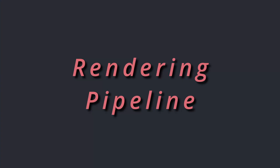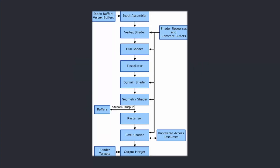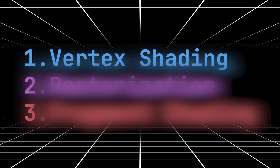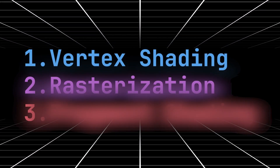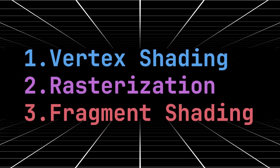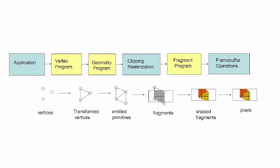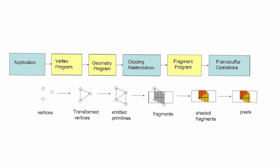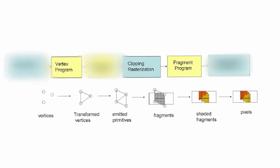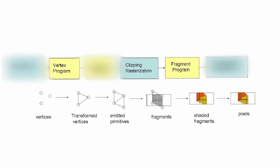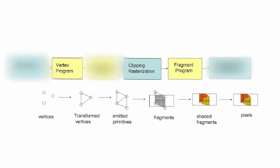At the heart of video game graphics lies the rendering pipeline — a process composed of multiple steps. Let's first focus on the three essentials: vertex shading, rasterization, and fragment shading. While the pipeline itself is a labyrinth of endless possibilities, these three serve as the cornerstone to all graphics applications.